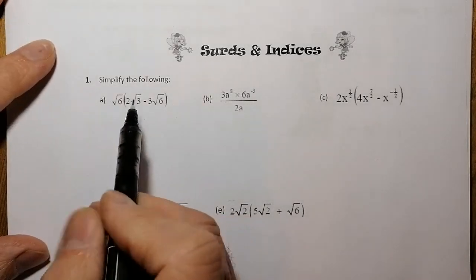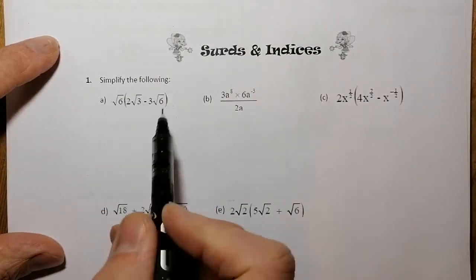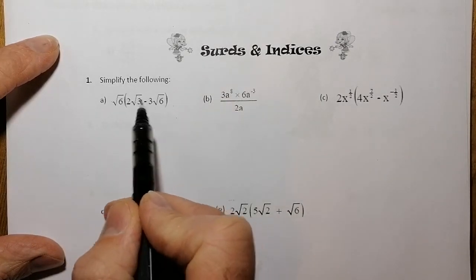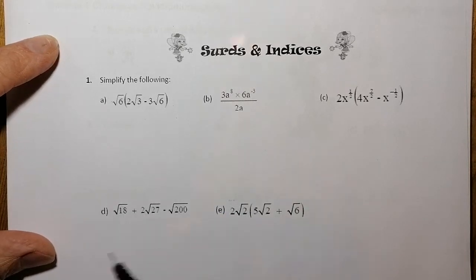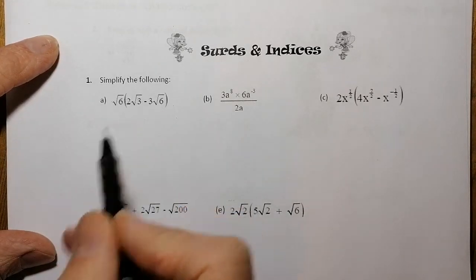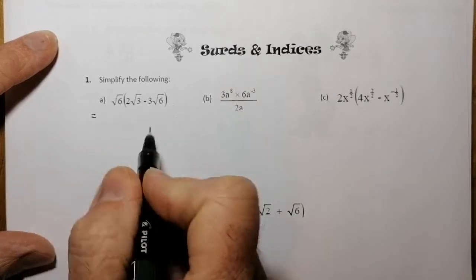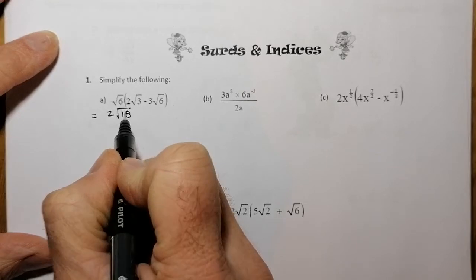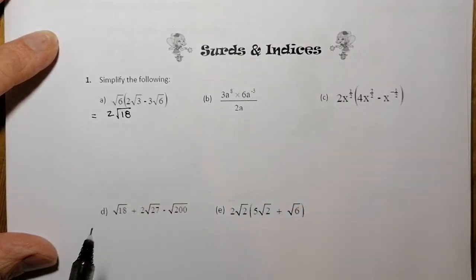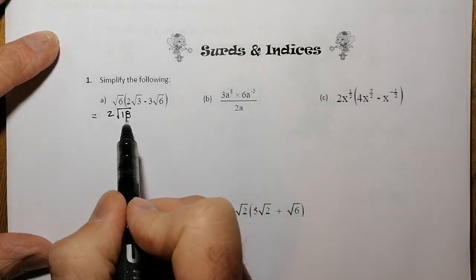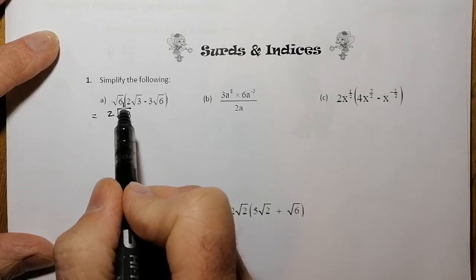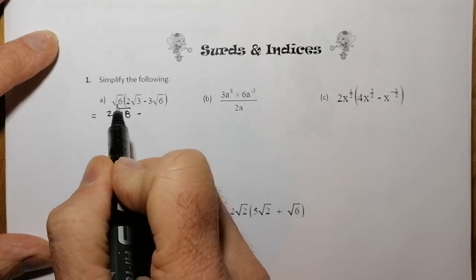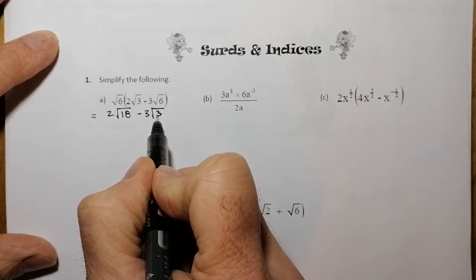So what we've got here is a bracketed surd expression. We're going to be multiplying out this bracket — the two terms inside the bracket by the term that's outside the bracket, just like we normally would. The only difference is we've got some surds here. So first I'm going to multiply to get 2 times root 9, which gives 2 root 18 for this first part. Then I'll multiply the next terms to give 3 root 36.